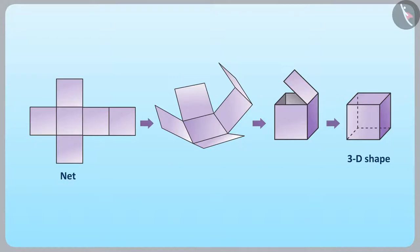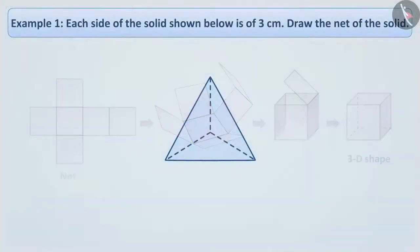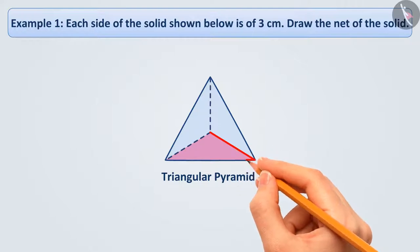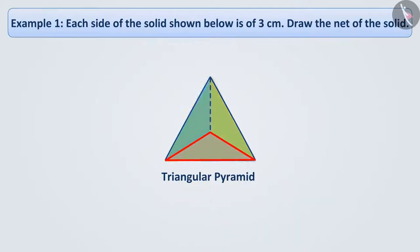Let us draw the net of the solid shape shown. The solid shape shown is a triangular pyramid. It has a total of 4 faces, all triangular. There is a triangle on each of the 3 sides of the triangular base.